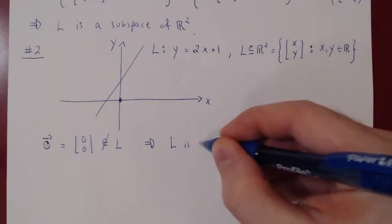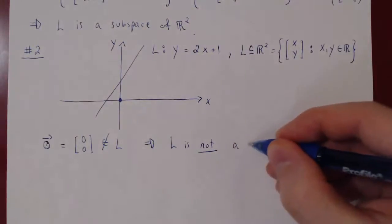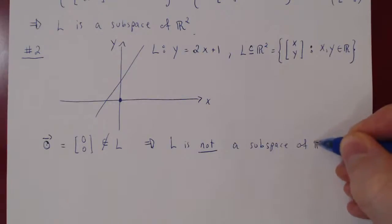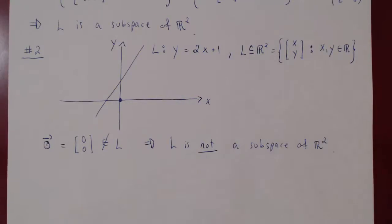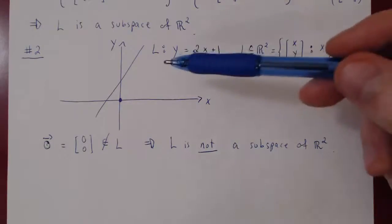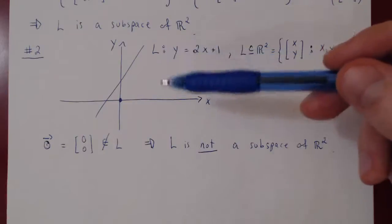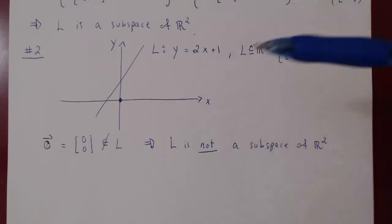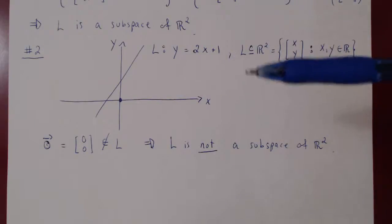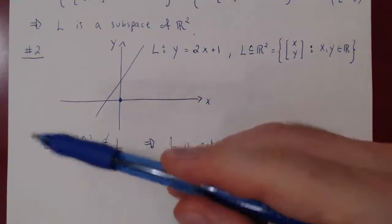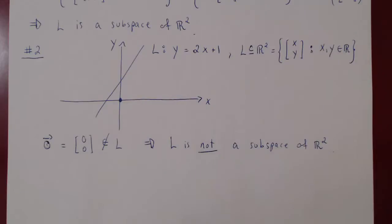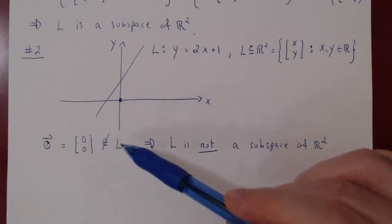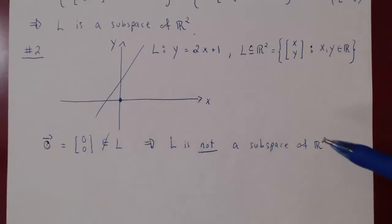Always keep this in mind. If L were a vector space, it would be closed under scalar multiplication, so you could multiply any vector by zero, and it would have to still be a vector in your space. But any vector times zero is the zero vector. So if your space is to be closed under scalar multiplication, the zero vector has to be an element of your space. The zero vector is not an element of this space, so L cannot be a subspace of R².